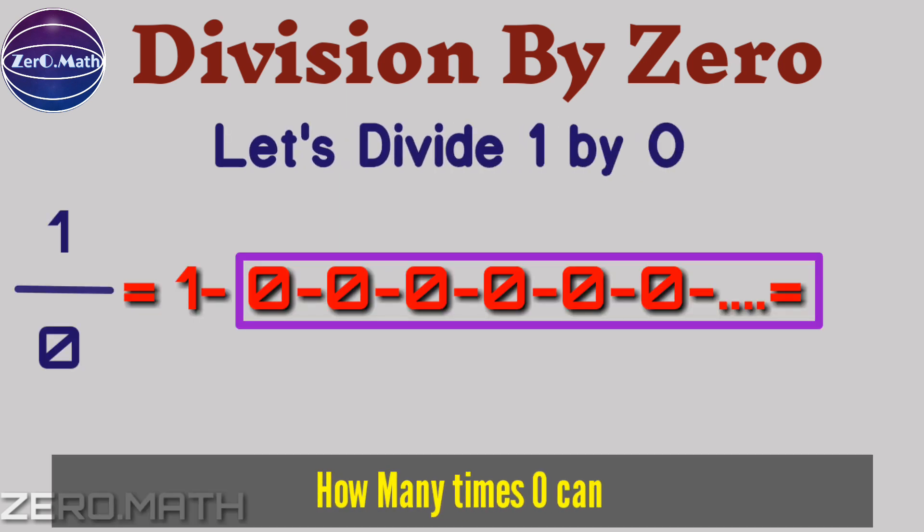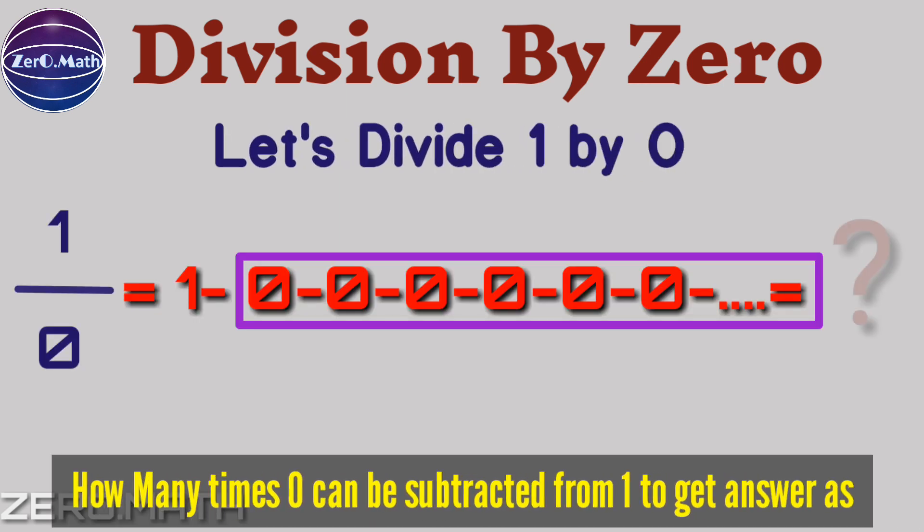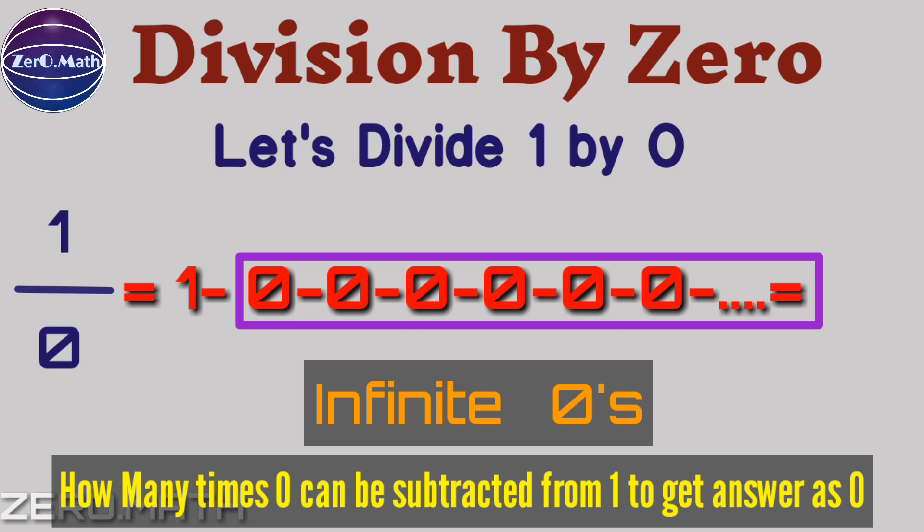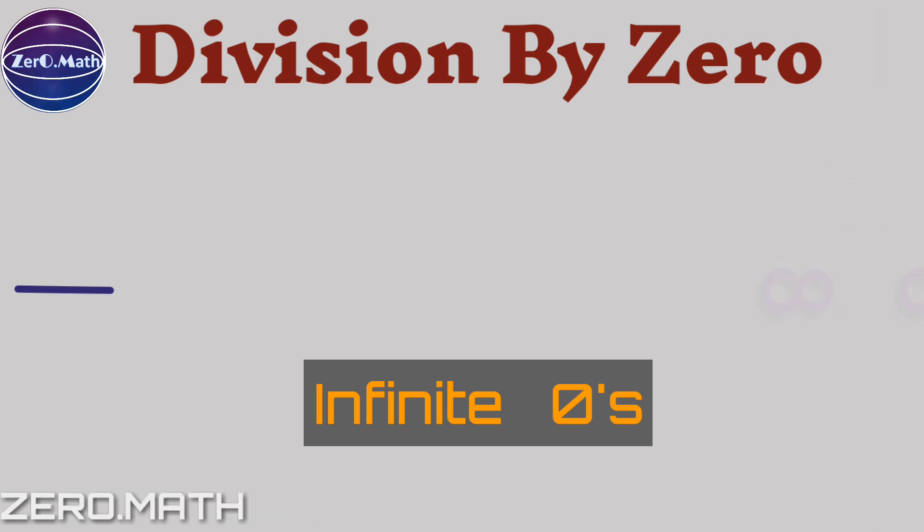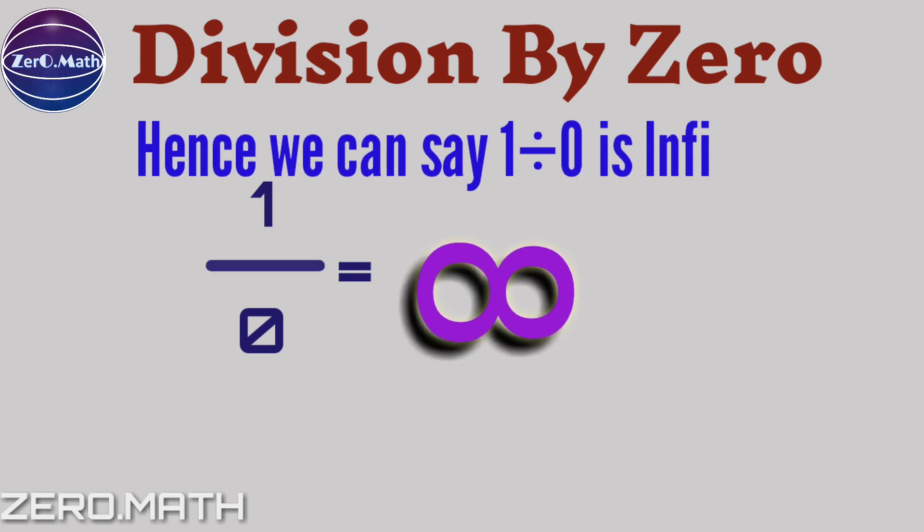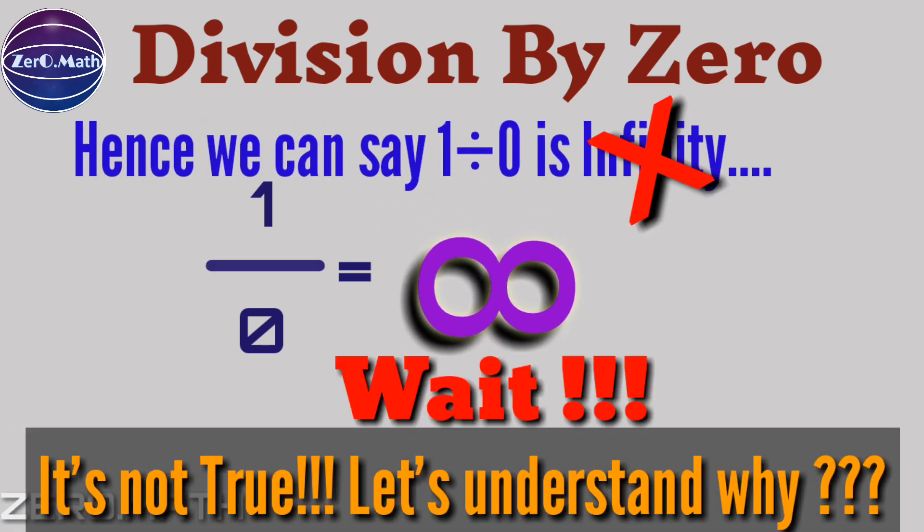Let's divide 1 by zero. How many times can zero be subtracted from 1 to get the answer as zero? 1, 2, 3, 4... we have to keep doing it forever. So the answer is infinity, isn't it? So 1 by 0, we can say it's infinity. However, it's not true. Let's understand why.